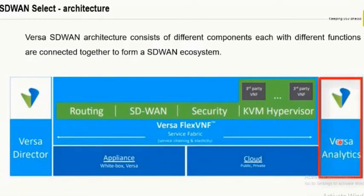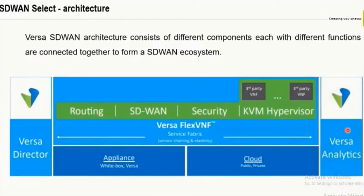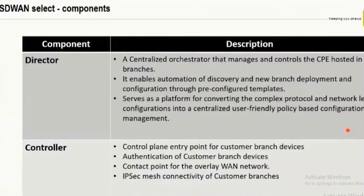The third component is Versa Analytics. Versa Analytics is basically your NMS, which gives you rich insights into different types of application flows, traffic flows, URLs, and performance — including IP SLA between branch to branch, and so forth. We're going to discuss this much more deeply in the upcoming slides.